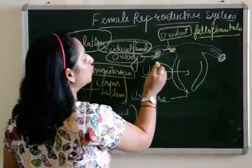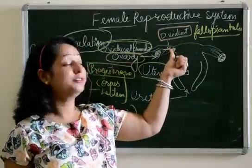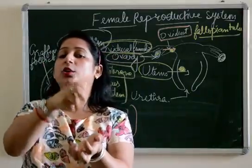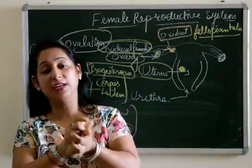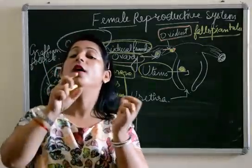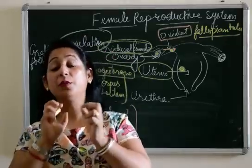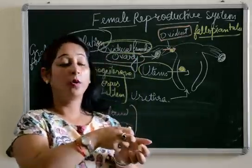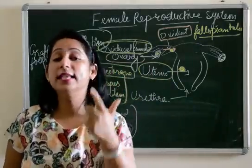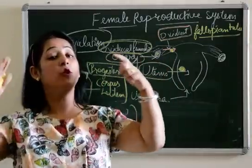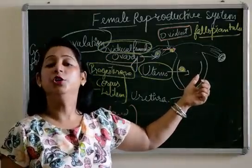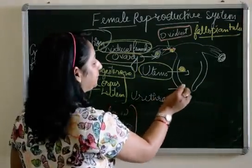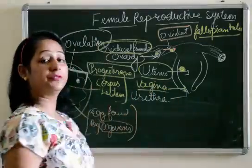The next part is the uterus. If fertilization occurs, the zygote will come down to the uterus and fix itself to the wall of the uterus. This process is known as implantation — the fixing of the blastocyst to the wall of the uterus. The functions of the uterus are: first, implantation occurs here; second, the development of the zygote or blastocyst into a full-grown baby all takes place in the uterus.